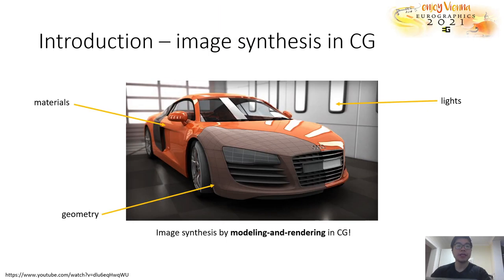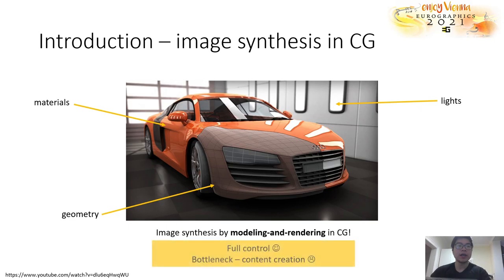The goal of this work is image generation, which has been long studied in computer graphics. Here we can see a very typical workflow in CG, where we first author the geometry of the scene, put on some material balls, and set up the lights. Then we execute the rendering engine to produce a very realistic image. This modeling and rendering process is fully controllable, but the bottleneck is that we need to explicitly author a fully detailed scene every time we want to generate an image.